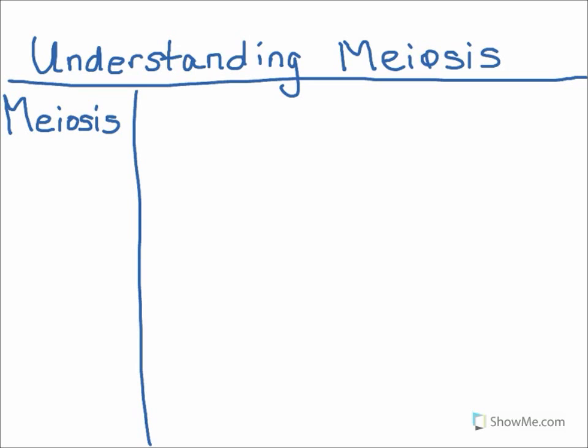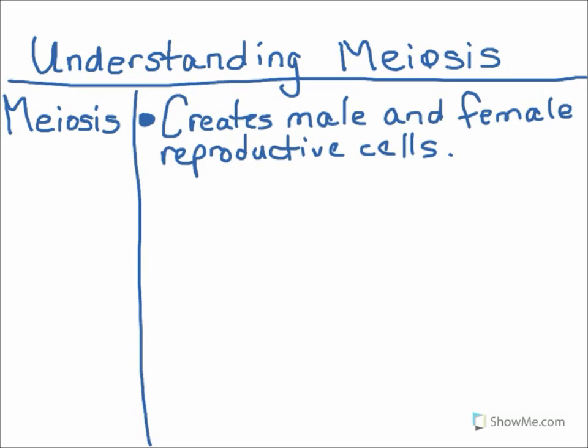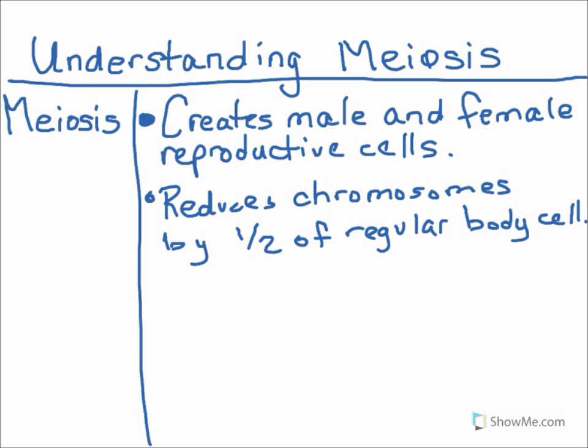Meiosis is a weird word for a very important process. Meiosis creates the male and female reproductive cells, the sperm and the egg. But it does so in a way that reduces the number of chromosomes to half of what is found in a regular cell. In addition, meiosis ensures that the population is diverse. There are over 8 billion different combinations of chromosomes in one person's sperm or egg cells. That's a lot of diversity. So how does this actually happen?